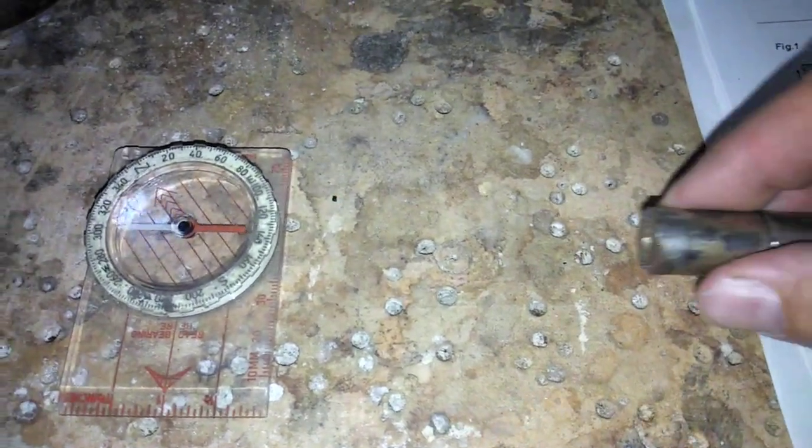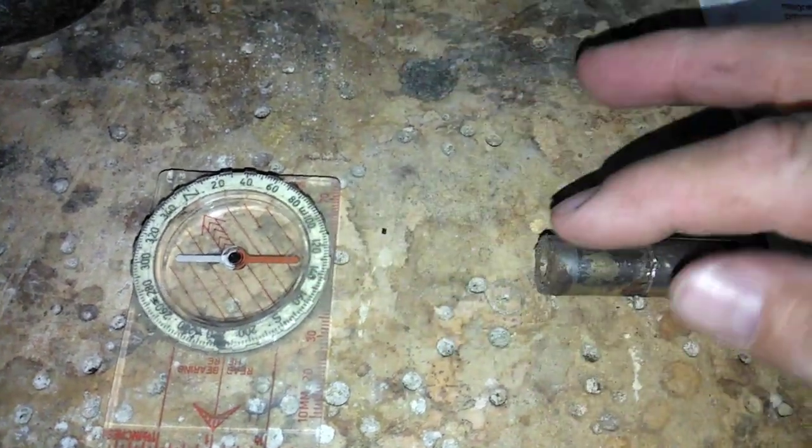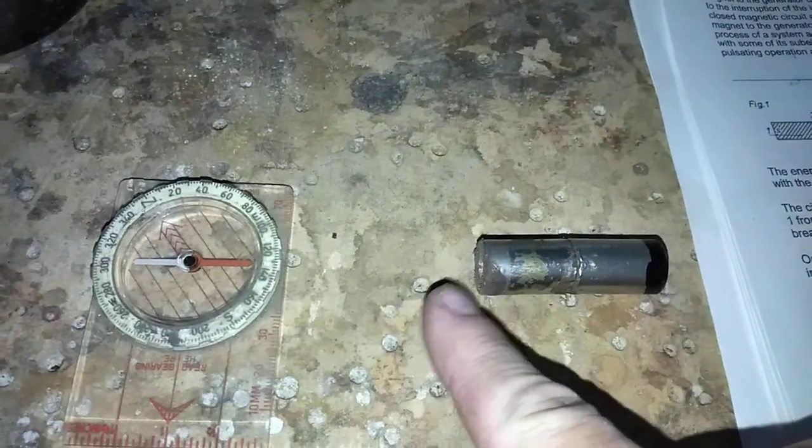So all I have to do is move that within range and you can see that the north is attracted to this end of the magnet. So that means that this end of the magnet is south.